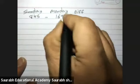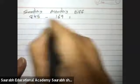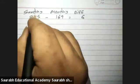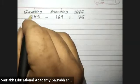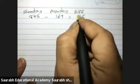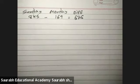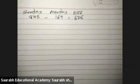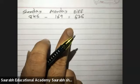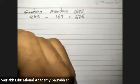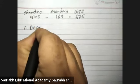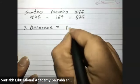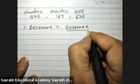845 minus 169: 5 minus 9, borrow — 6; 3 minus 6, borrow — 7; 8 minus 1 minus 1 = 6. So the decrease is 676 people. Percentage decrease is equals to Decrease upon Original into 100, that is 676 upon 845 into 100.